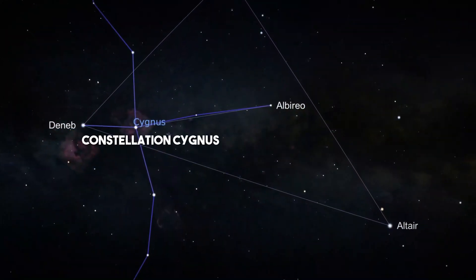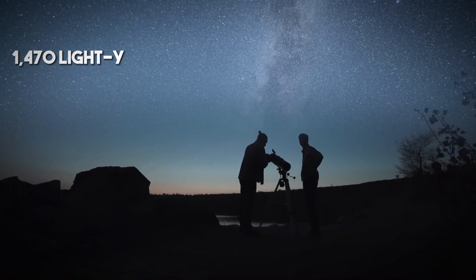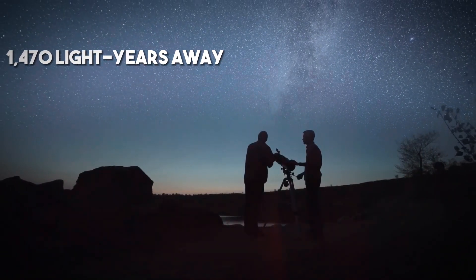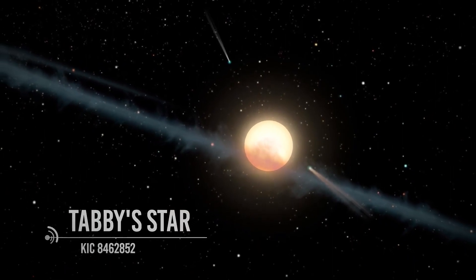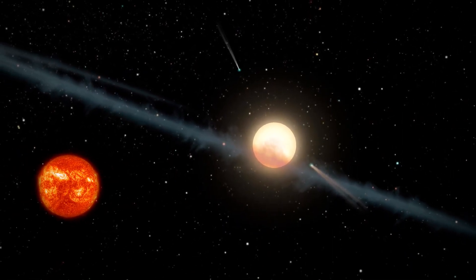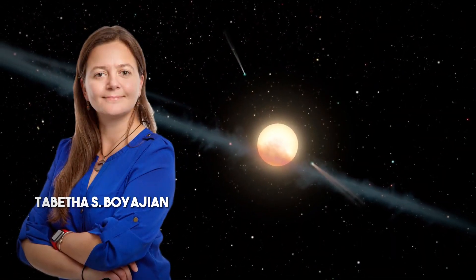Located in the constellation Cygnus, about 1,470 light-years away, Tabby's star is an F-type main-sequence star, larger and hotter than our own Sun. It was named after Tabitha S. Boyajian,